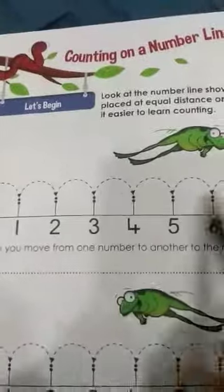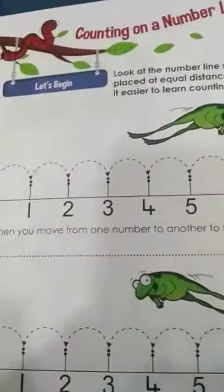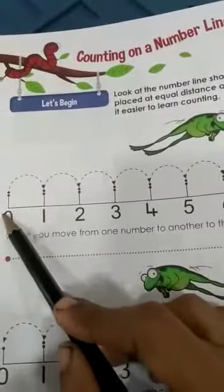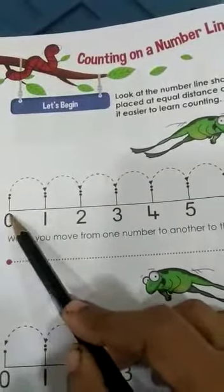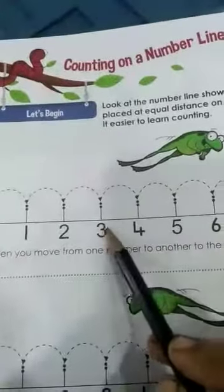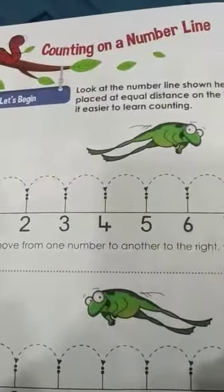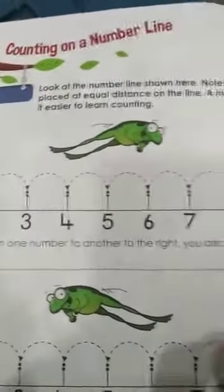This is what you call a number line. A straight line and they are having numbers starting from 0, 1, 2, 3, 4, 5, 6, 7, 8, 9, and here till 10. This corner, they have 10. So from 0 to 10, they have written over here.